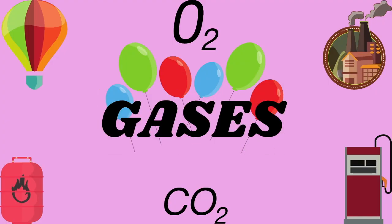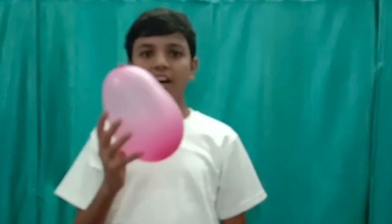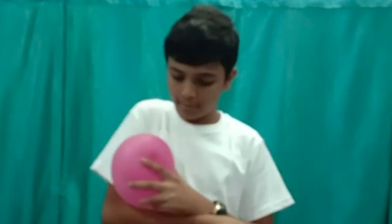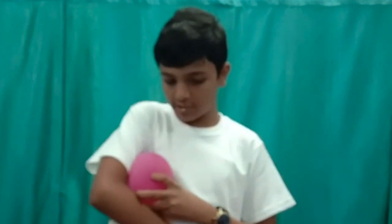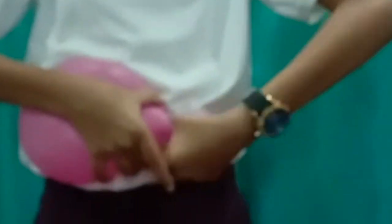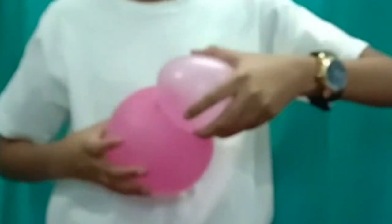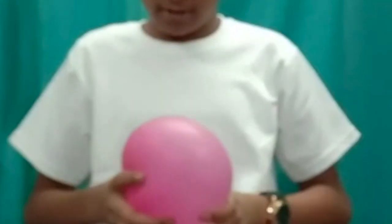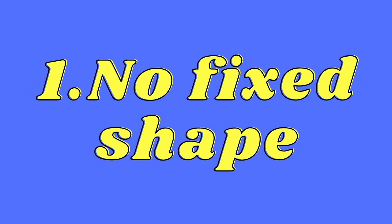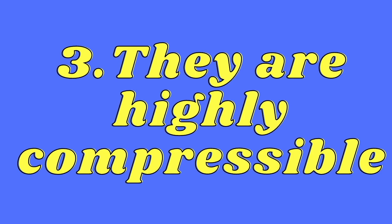I have a balloon — it's quite big and round. Now I'm going to squeeze it. As you can see, I can easily squeeze it, and I can divide it into smaller parts — see, it's a snowman shape! From this we can say that gases do not have a fixed shape, they do not have a fixed volume, and they are highly compressible.